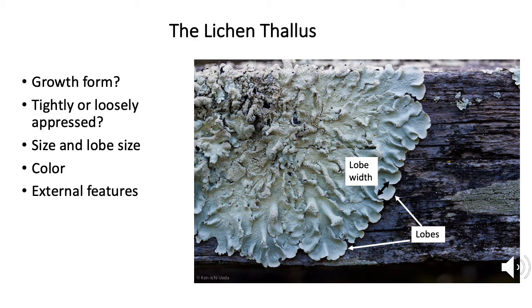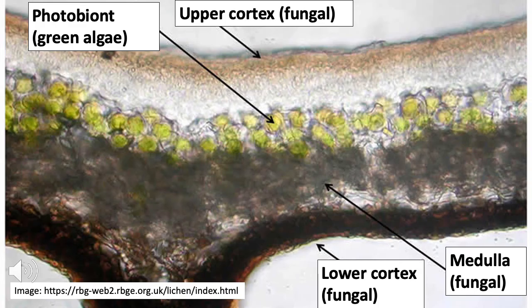The lichen can be so closely attached to its substrate that it grows inside of it, or it can be attached by small structures called rhizines or a central stalk, or it might not be attached to anything at all. As you may already know, lichens are made up primarily of a fungus — the mycobiont — which is about 80% or more of the body in most lichens. The other 20% or so is the photobiont, the photosynthetic partner, which is either green algae or cyanobacteria. About 85% of lichens you'll see are green algal lichens, about 10% are cyanolichens, and a few percent contain both algae and cyanobacteria.